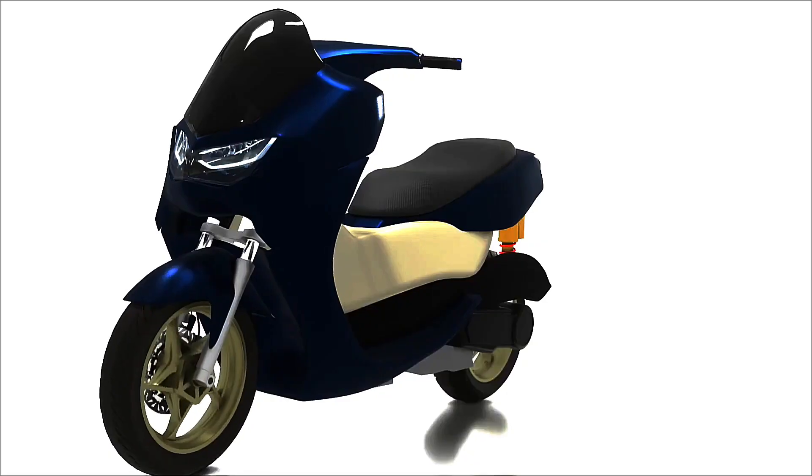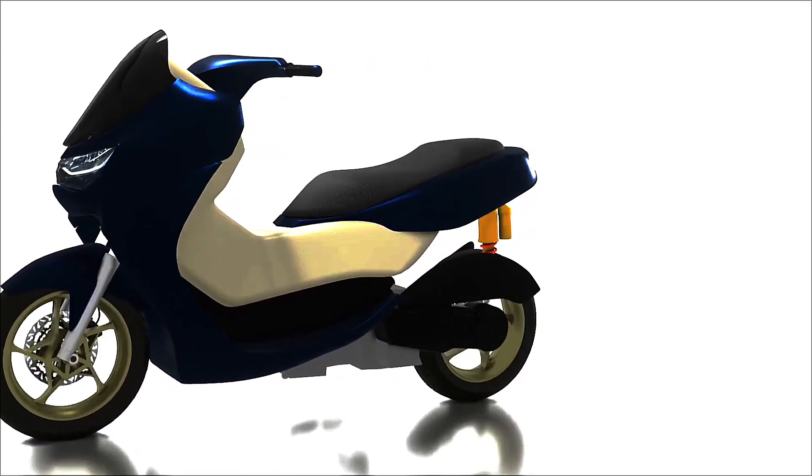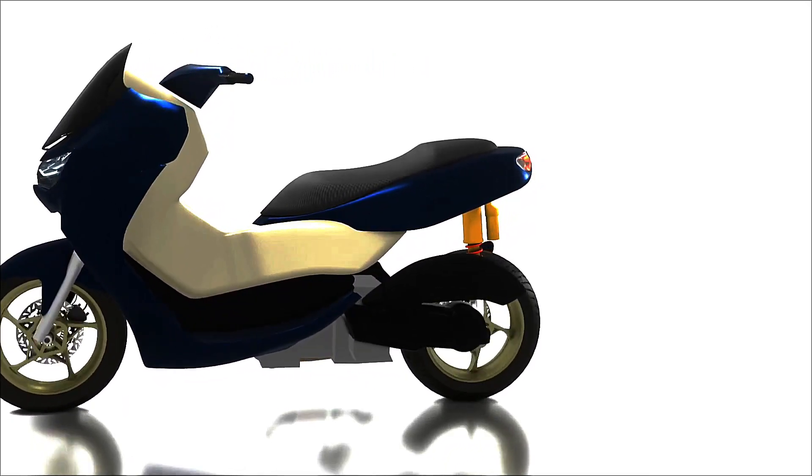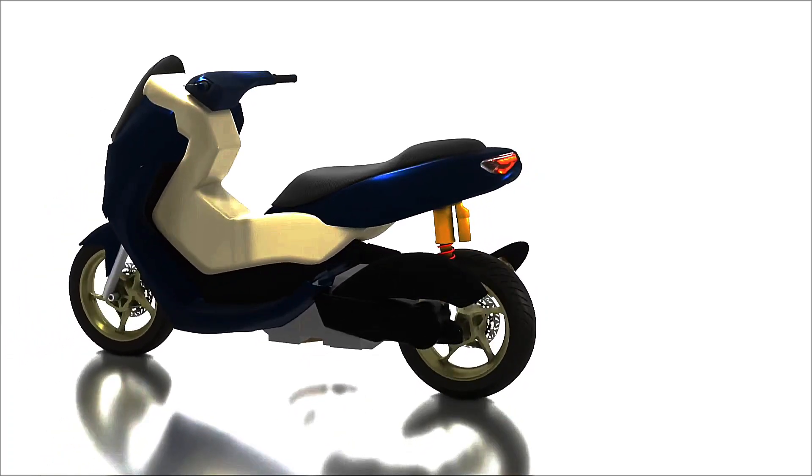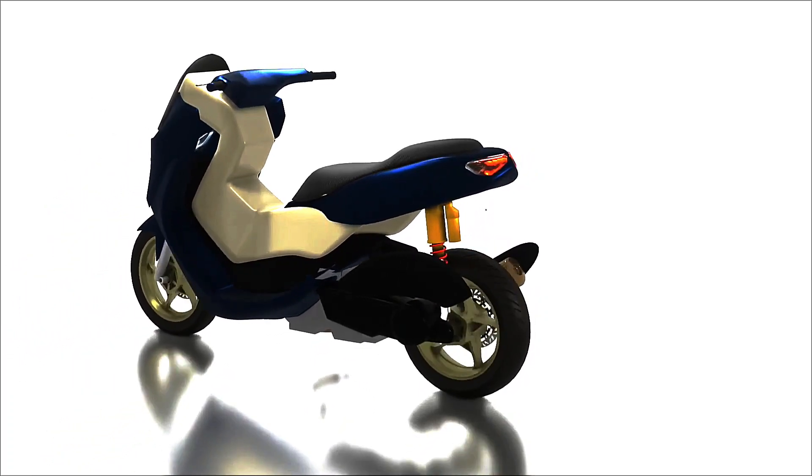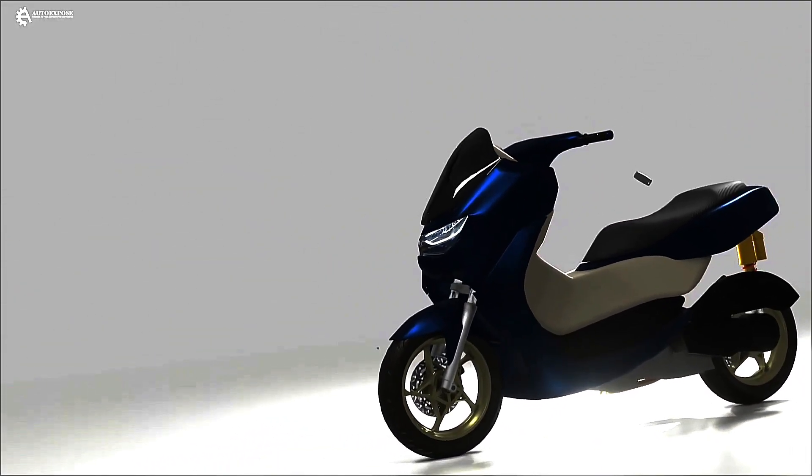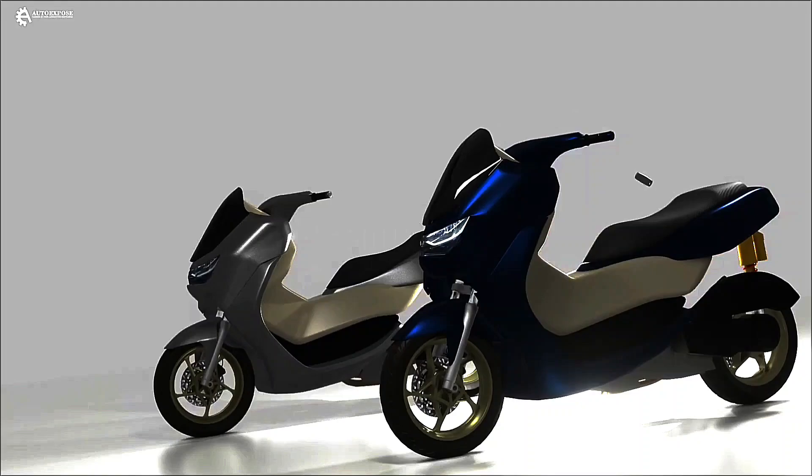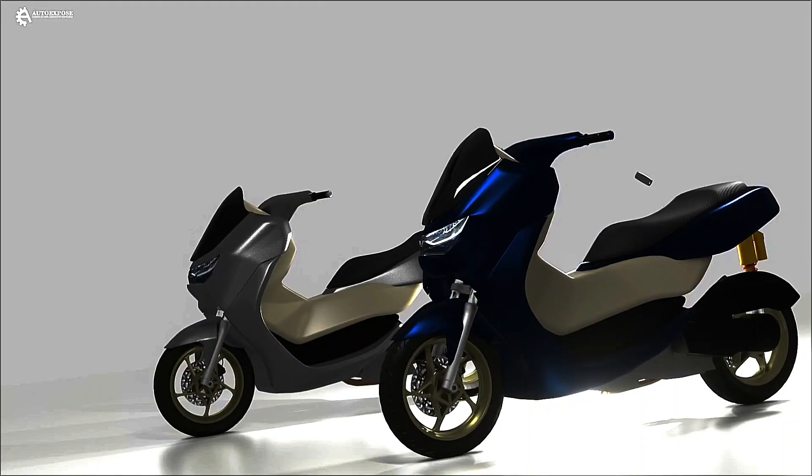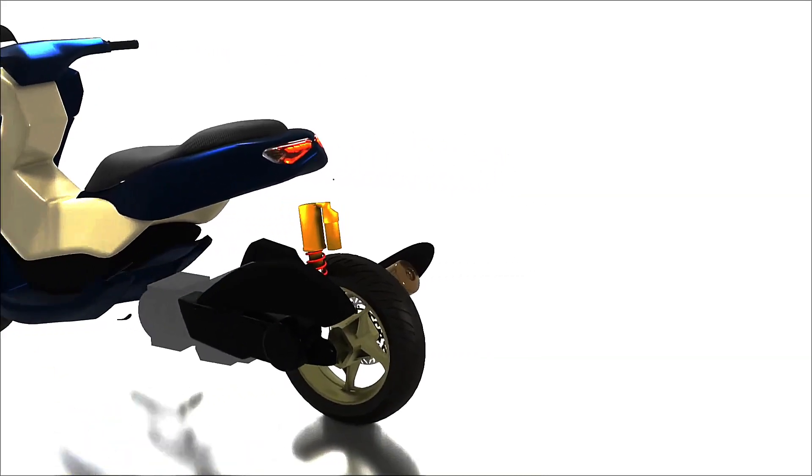Then what about automatic motorcycles? Can they use engine brakes? There is no clutch. In general, this engine brake can be applied to every type of motorcycle. However, on automatic motorcycles, it is a bit different, because automatic motorcycles use centrifugal clutches whose rotation direction cannot be reversed. An explanation of the engine brake on automatic motorcycles will be discussed in the next video.